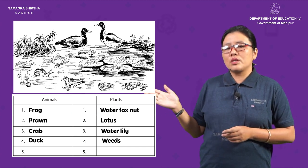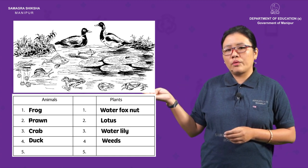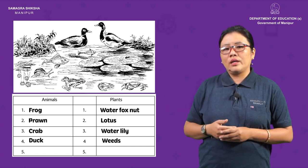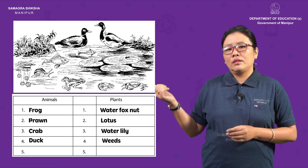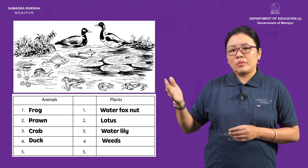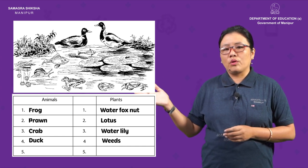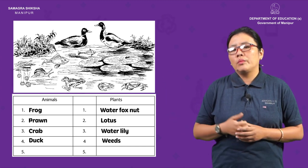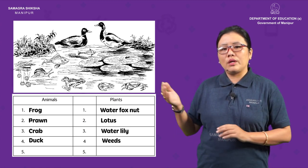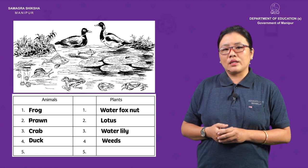The first picture shows a fox nut, a lotus, a water lily, a duck, a frog, a prawn, and a crab.